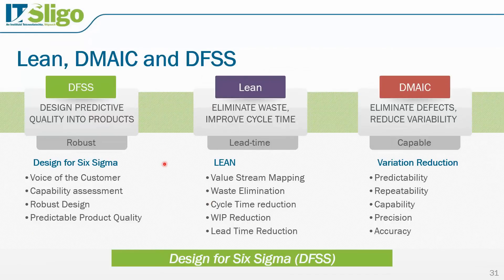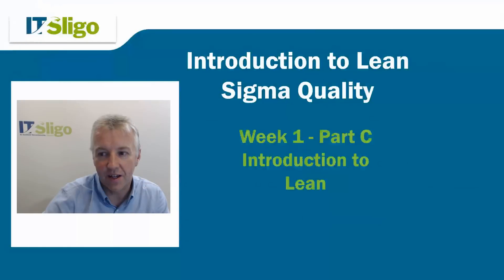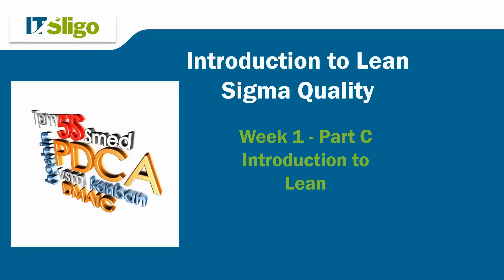As a final summary for this section: lean addresses waste, cycle time, lead time, and the tools used. Six Sigma and the DMAIC process focus on eliminating defects, reducing variability, and improving predictability and precision. There is also a big push now around Design for Six Sigma, also called DFSS, which aims for robust product design — more tolerant to variation during manufacturing and during use. Newer DFSS tools include VOC (Voice of the Customer), capability assessment, robust design, and predictable product quality. We'll discuss the lean tools and the seven wastes in more detail in part D of this week's lecture.